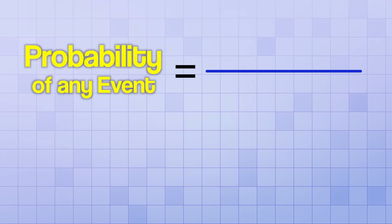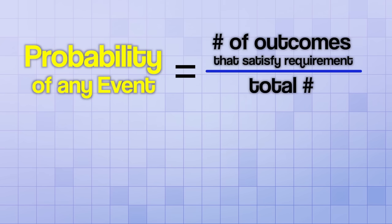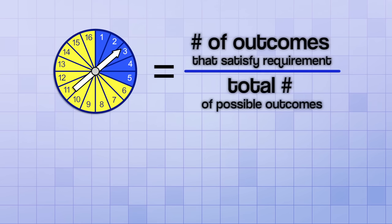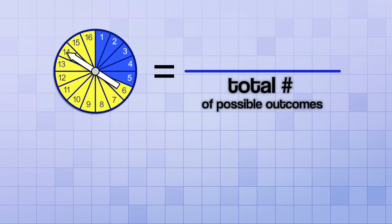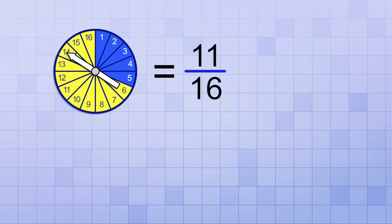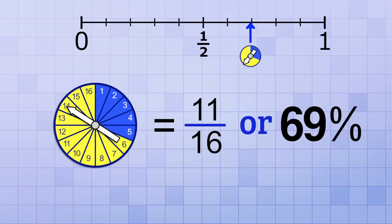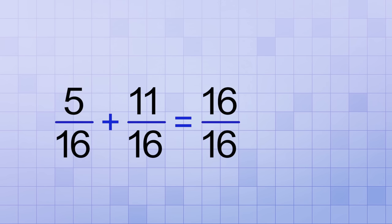And this method will work for figuring out the probability of any event. You just make a fraction with the numerator as the number of outcomes that satisfy your requirement and the denominator as the total number of possible outcomes. Let's try the same method to find the probability of spinning a yellow. Our top number should be 11 because there are 11 yellow sectors. And our bottom number should still be 16. So the probability of spinning a yellow is 11 over 16. Now we finally have a probability that's considered likely! And it makes sense because you can see by looking at our spinner that it's more likely to spin a yellow than a blue. And you'll notice, if we add up 5 over 16 and 11 over 16, we get 16 over 16. So that's a good sign that we did it right.